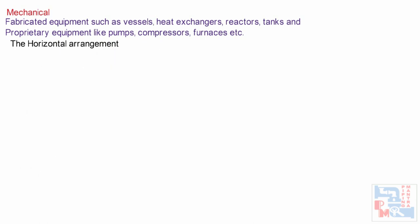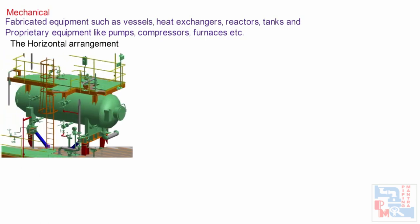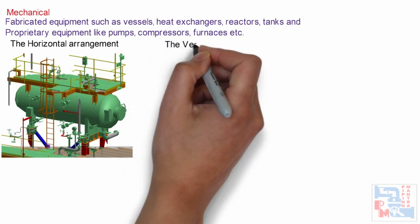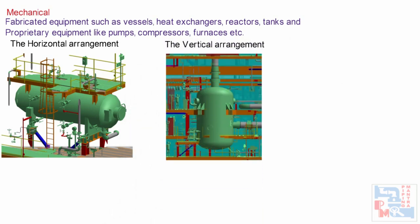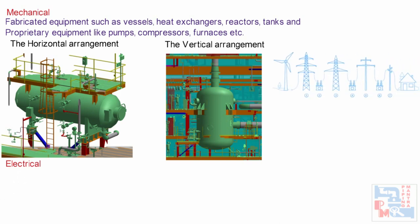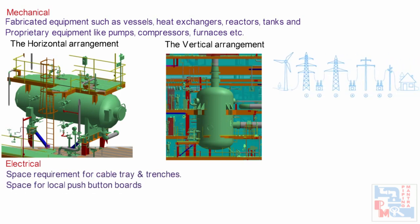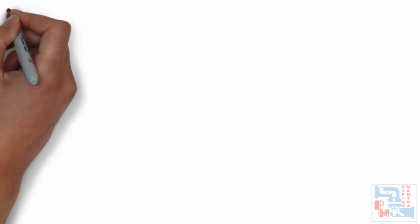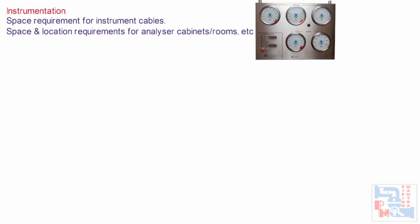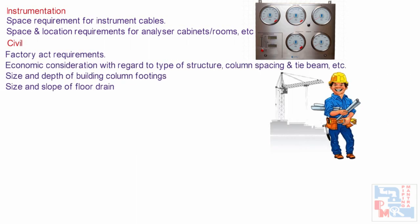The equipment layout can basically be divided into two configurations. Horizontal equipment: the grade-mounted horizontal arrangement as seen in refineries and petrochemical plants. Vertical equipment: the vertical arrangement as seen in many chemical process industries, located at multiple levels in steel or concrete structure. From electrical, we need information like space requirements for cable racks and trenches, and space for local push button boards. From instrumentation, we need space requirements for instrument cables, and space and location requirements for analyzer cabinets or rooms.